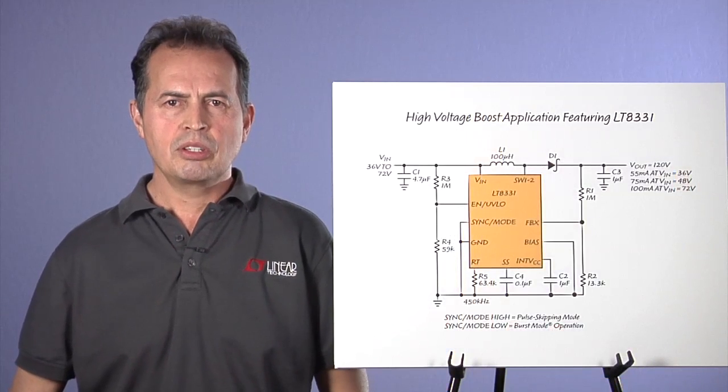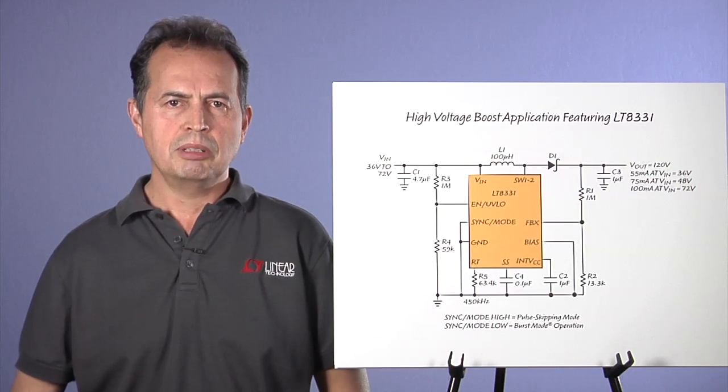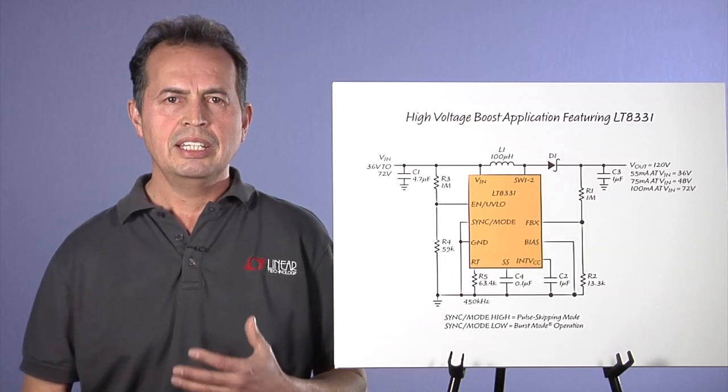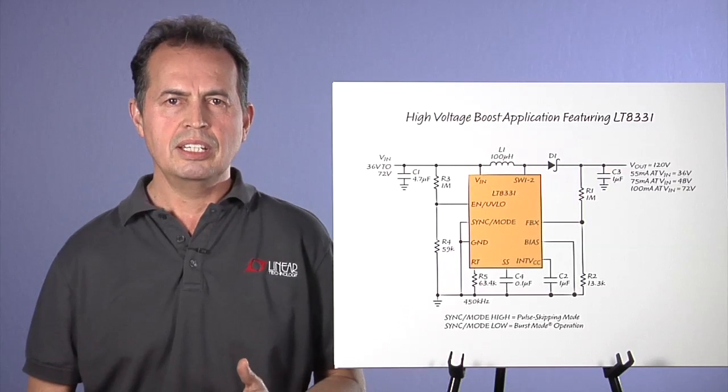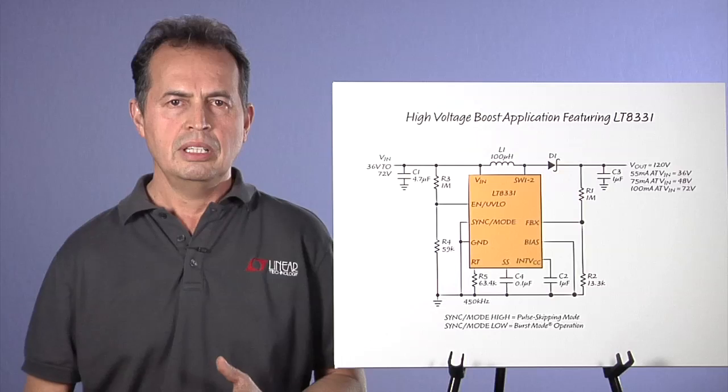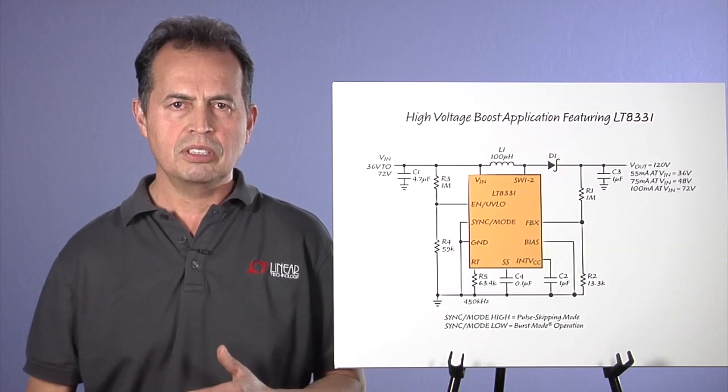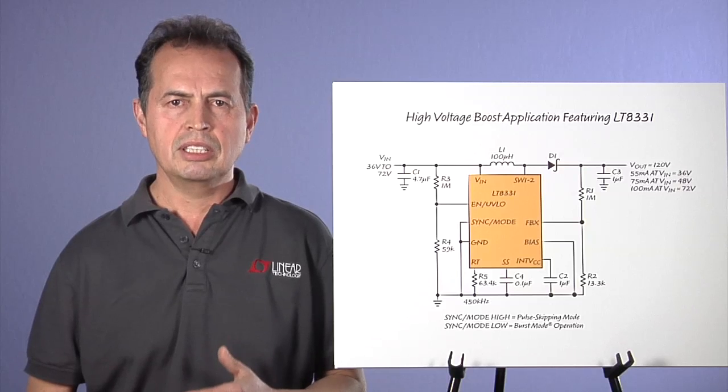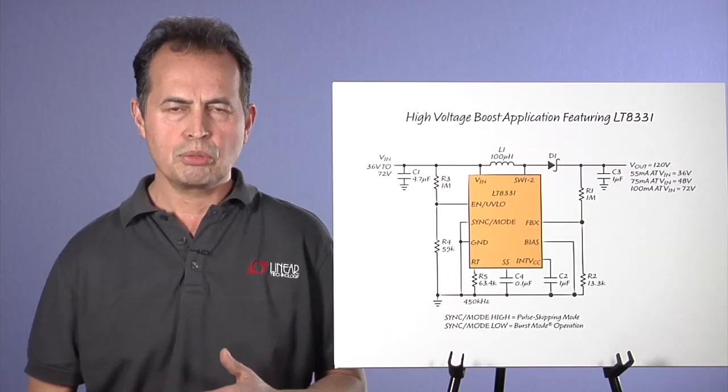Although the LT8330 covers low and high voltage applications, for output voltage higher than 48 volts, the LT8331 is a suitable part. It has an internal 140 volt, 500 milliamp switch and shares many features with the LT8330 but offers more.